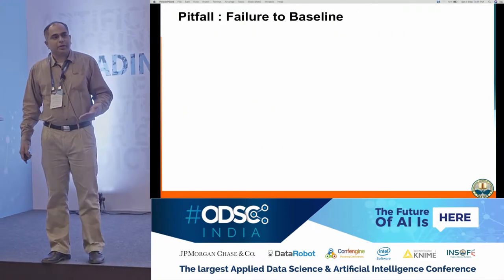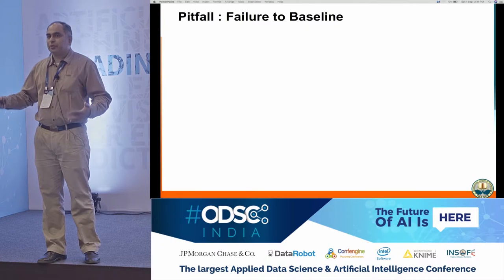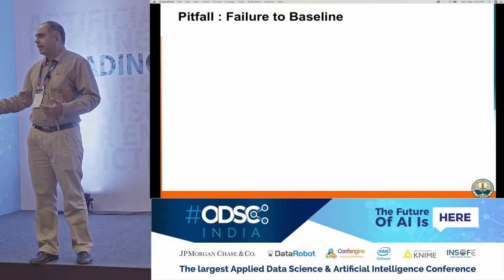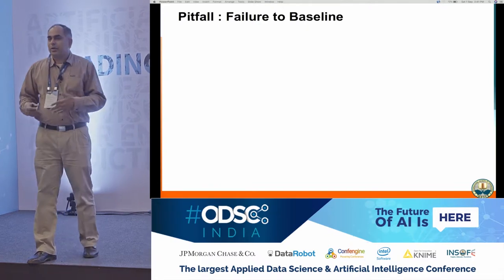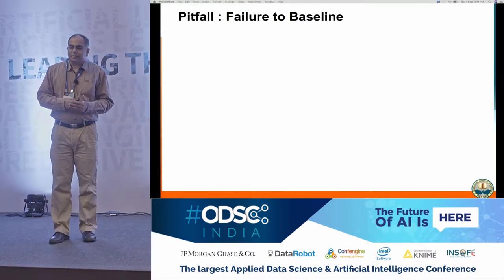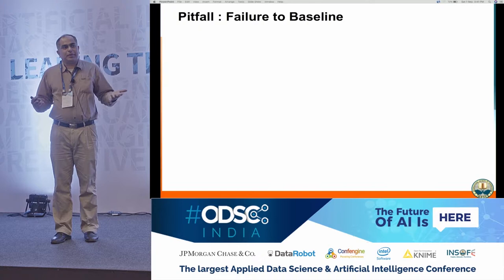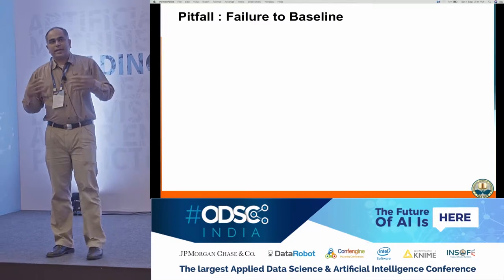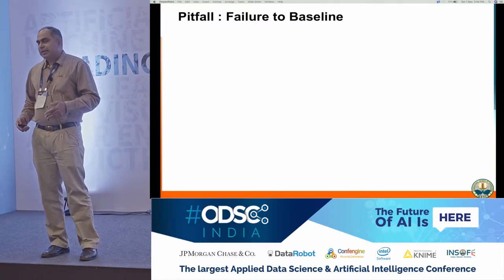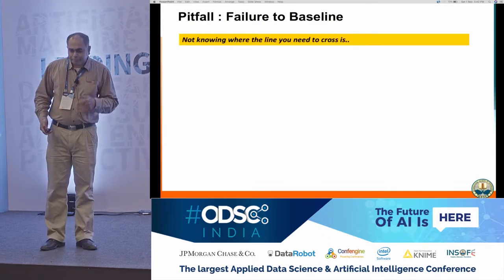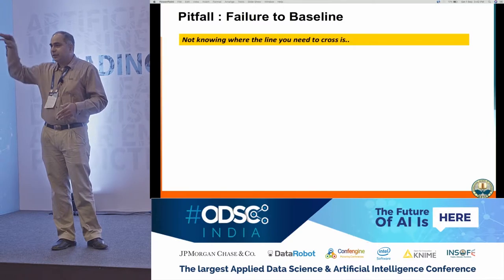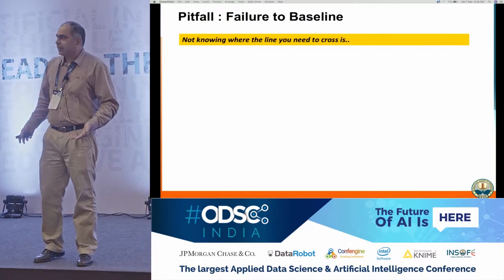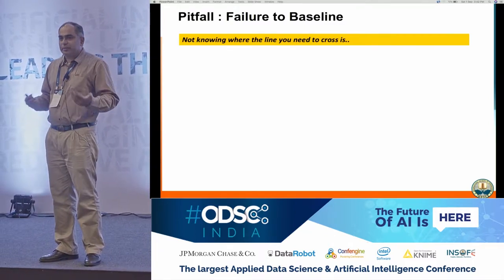Once you've set the expectation, you need to figure out how much accuracy you can expect from this. They're going to ask you, or you need to tell them — this is how much accuracy I can expect, and then they will say, okay, go ahead, or they will say, it's not worth it. The other pitfall is failure to baseline. If the IBM Watson people had known what the doctors were expecting, they might have tried a different approach. If you don't know where the line is that you need to cross, how will you know your chances of success?